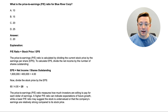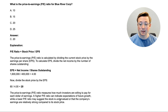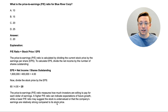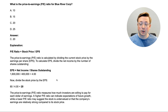The price to earnings ratio measures how much investors are willing to pay for each dollar of earnings — in this case, $20 for every $1 the company earns. A higher PE ratio can indicate expectations of future growth. A lower PE ratio may suggest the stock is undervalued, or that the company's earnings are strong relative to its stock price. It's a two-equation calculation: first EPS, then PE.